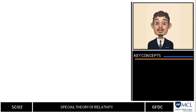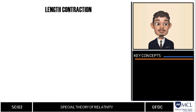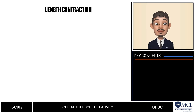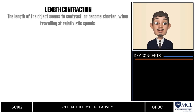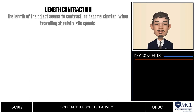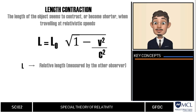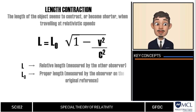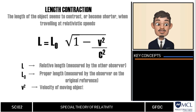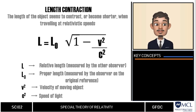Now for length contraction: as a natural consequence of the special theory of relativity, the length of an object seems to contract when traveling at relativistic speeds. In equation form, L equals L sub zero multiplied by the Lorentz factor, where L is the relative length measured by another observer, L sub zero is the proper length measured by the observer in the original reference frame, v is the relative velocity of the two inertial frames, and c is the speed of light.